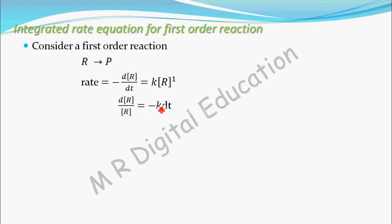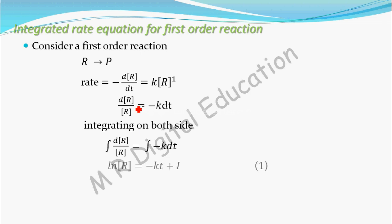Now integrate on both sides. The integration of 1 by R is ln R — it is similar to the integration of 1 by x dx, which gives log x. So integration of 1 by R with respect to dR is ln R, where ln indicates logarithm of base e.